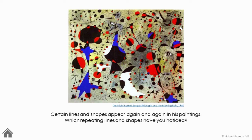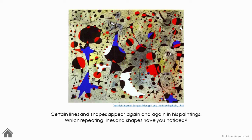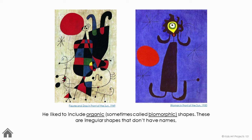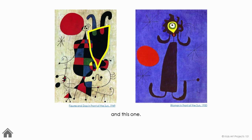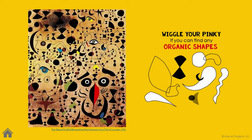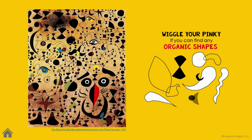Certain lines and shapes appear again and again in his paintings. Which repeating lines and shapes have you noticed? He liked to include organic, sometimes called biomorphic shapes. These are irregular shapes that don't have names — like this one, and this one, and this one. Wiggle your pinky if you can find any organic shapes in this painting. There are several.